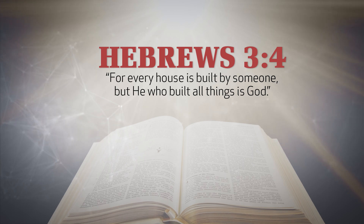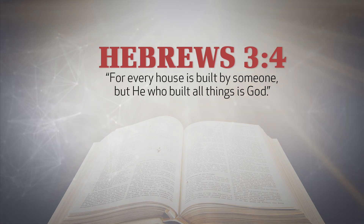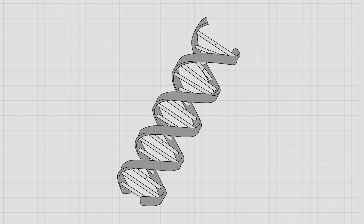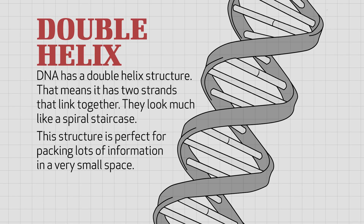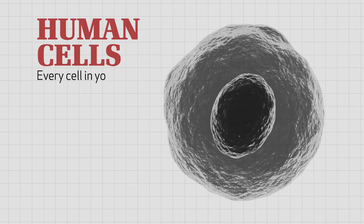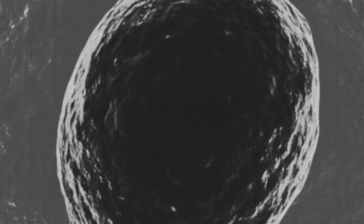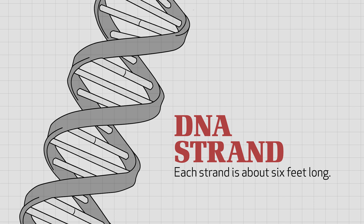As we look at that DNA, we see that it has a double helix structure. That means it has two strands that link together and they look much like a spiral staircase. This structure is perfect for packing lots of information in a very small space. Every cell in your body contains a strand of DNA, and each strand is about six feet long.